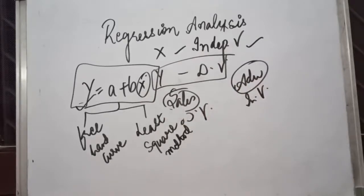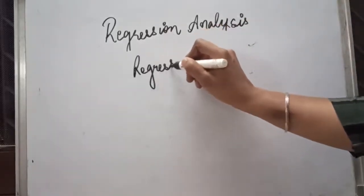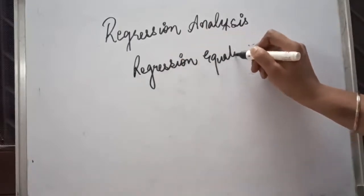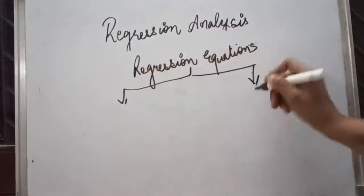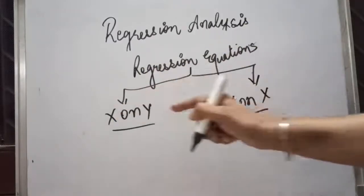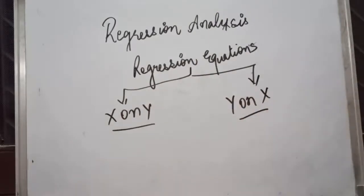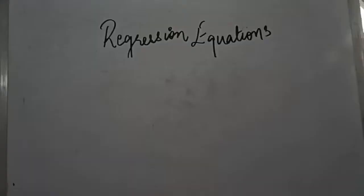Coming to the algebraic methods, we have various different types available to calculate the regression equations. Our task in this chapter is to find regression equations, and there are two regression equations in every question. The first equation is x on y and the second equation is y on x. X on y means x is depending upon y, and y on x means y depends upon x.